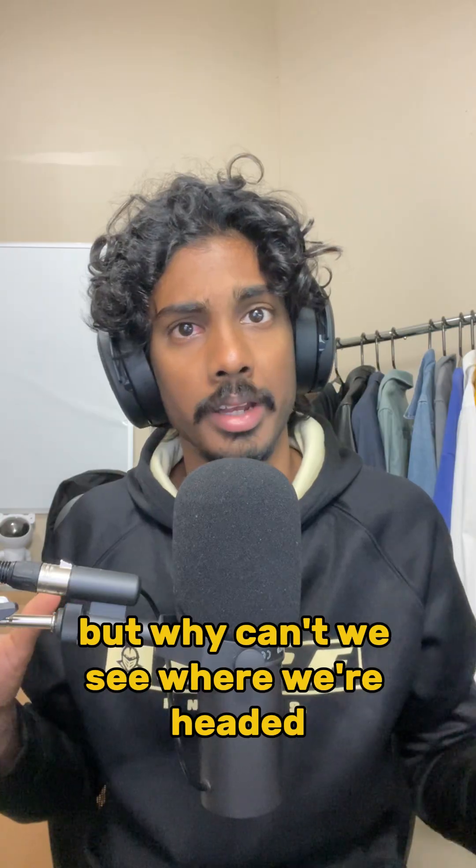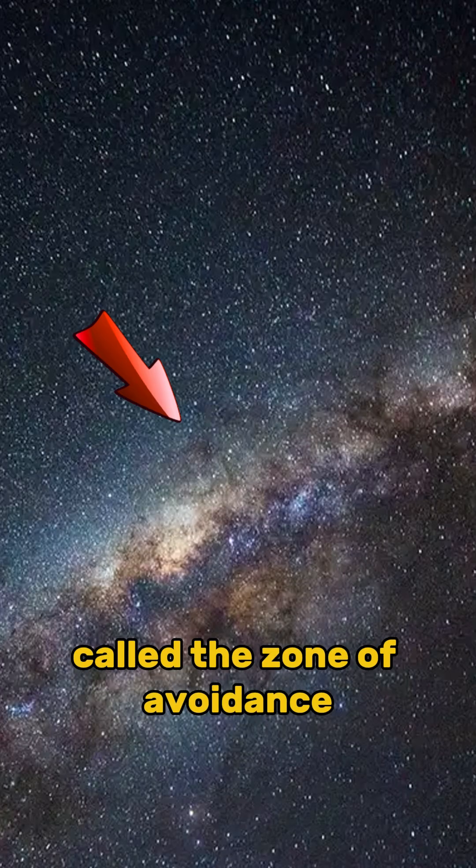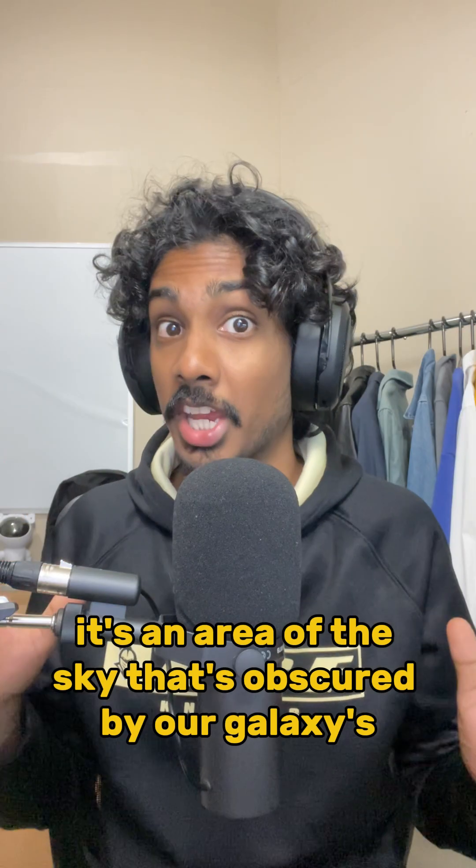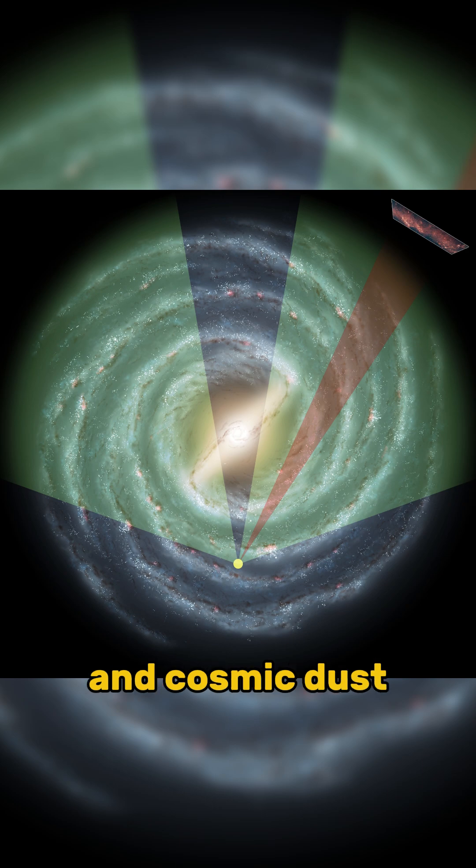But why can't we see where we're headed? That's because the Great Attractor is hidden behind a region in space called the Zone of Avoidance. It's an area of the sky that's obscured by our galaxy's galactic plane and cosmic dust.